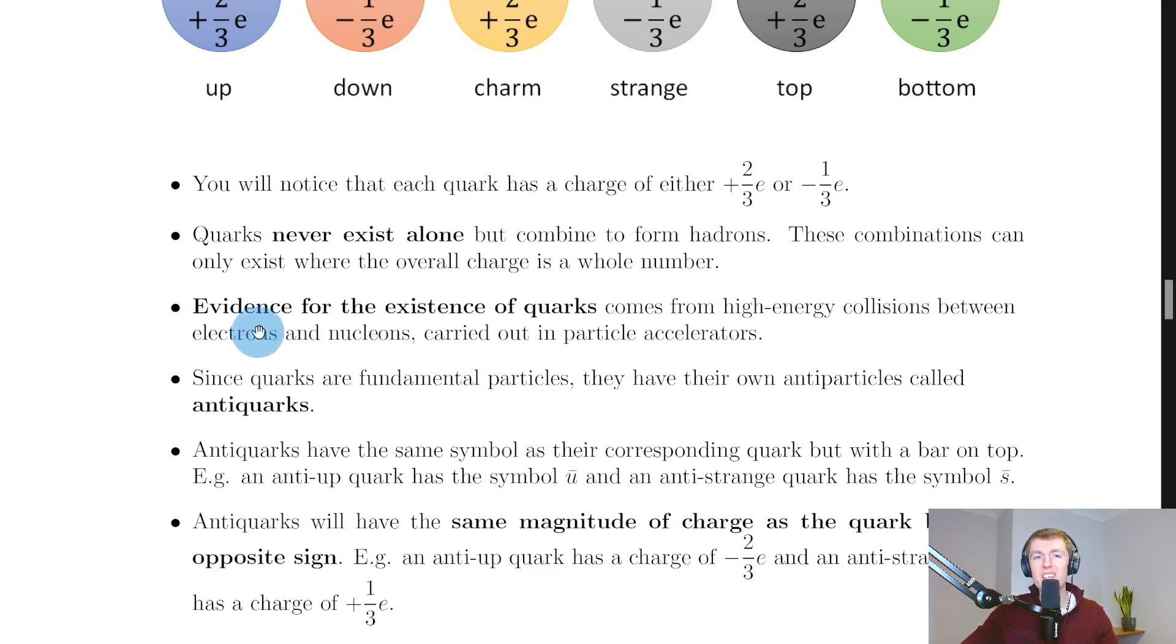How do we know quarks exist? The evidence for the existence of quarks comes from high-energy collisions between electrons and nucleons carried out in particle accelerators. Remember, we've seen the different types of particle accelerators in previous theory videos for the particles and waves topic, and we looked at how those work.